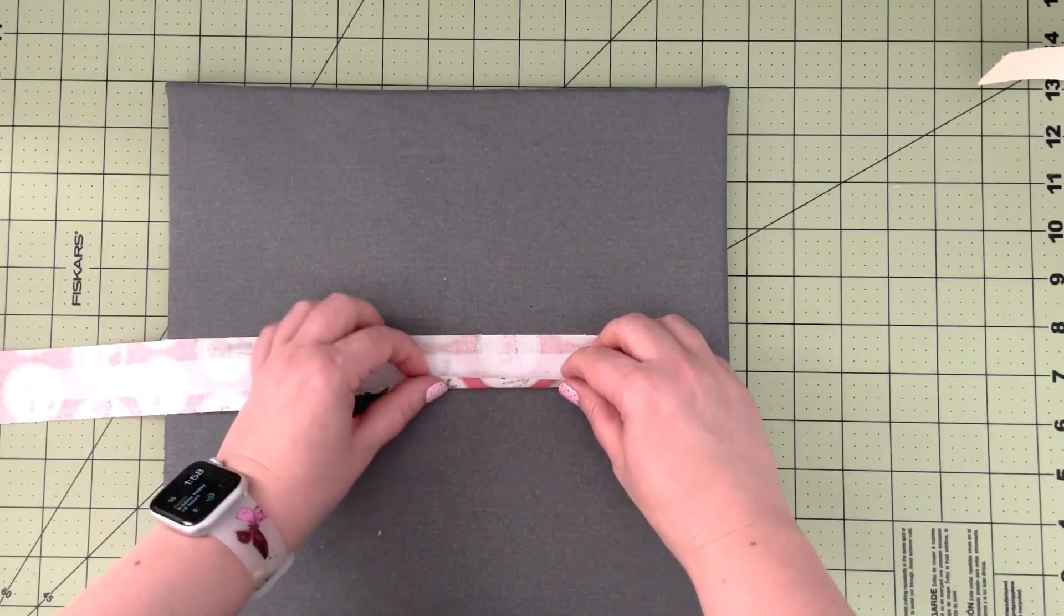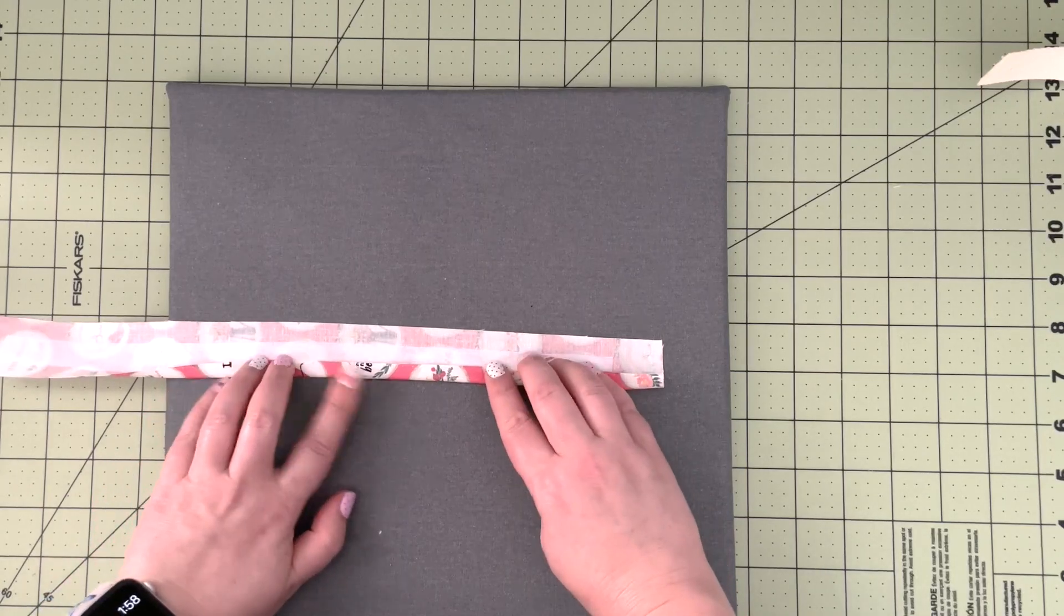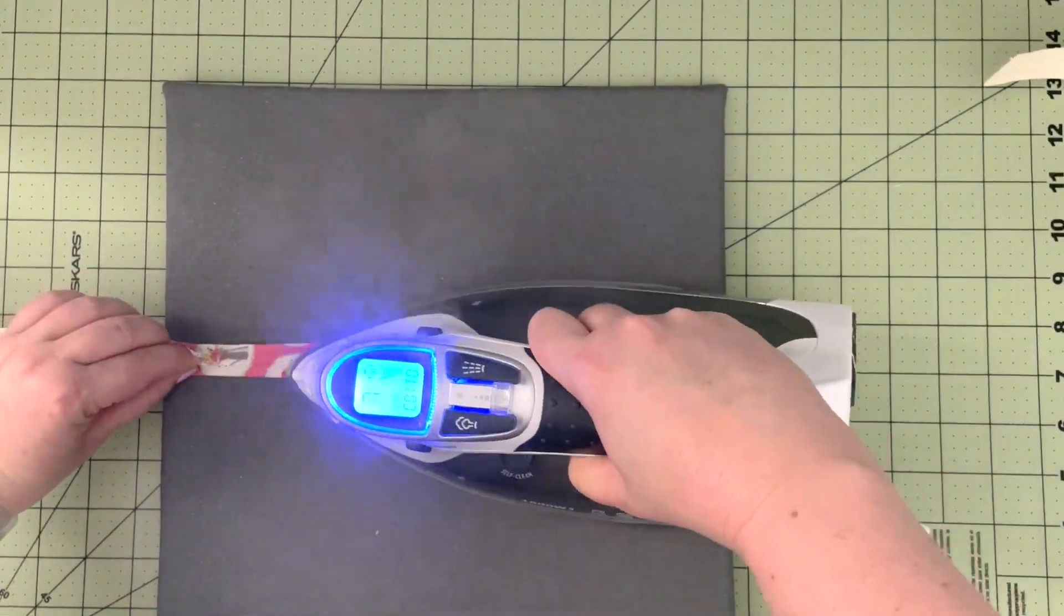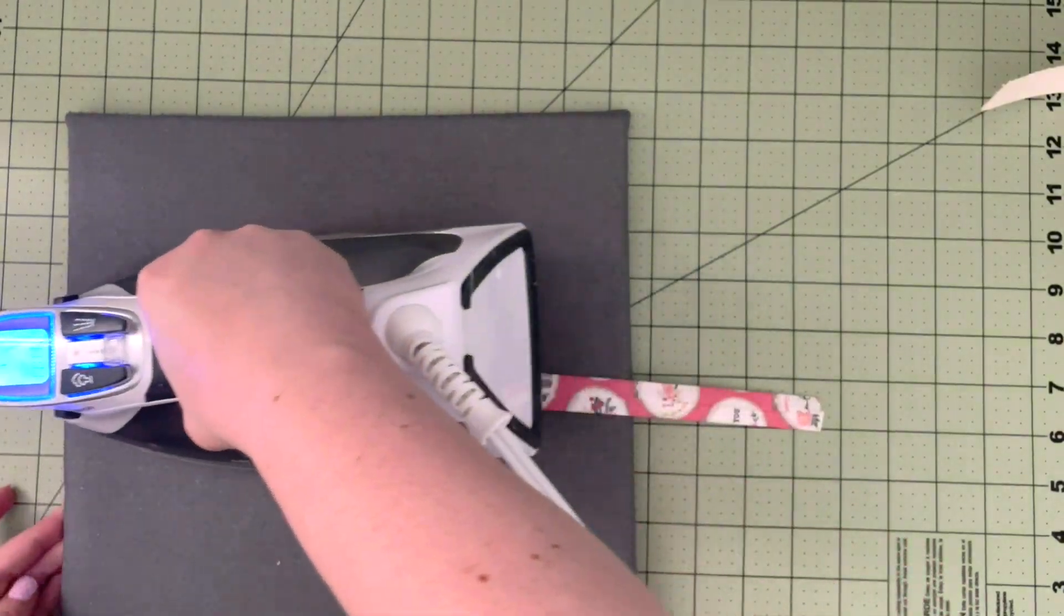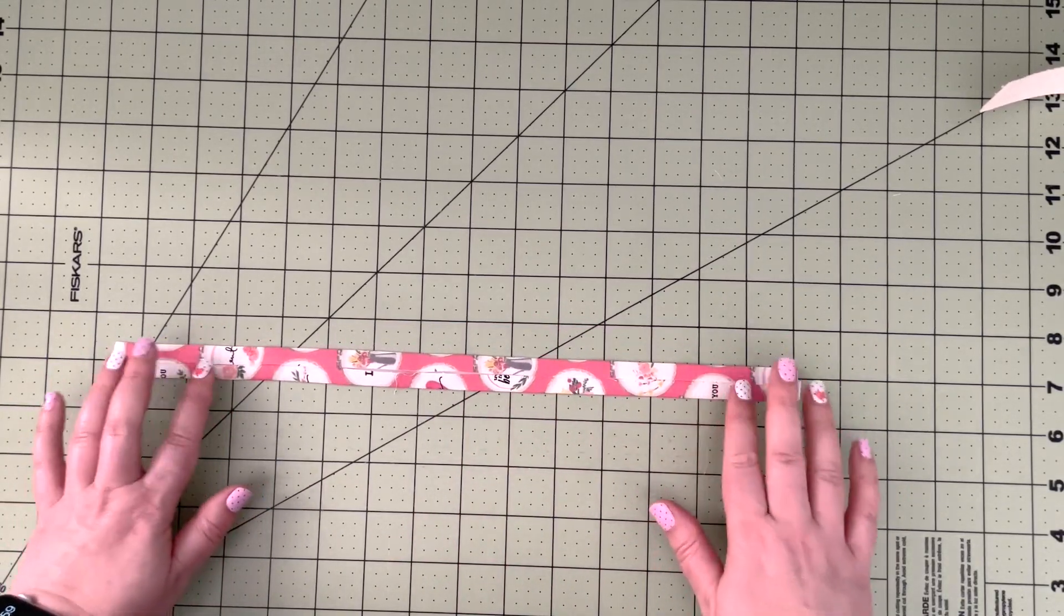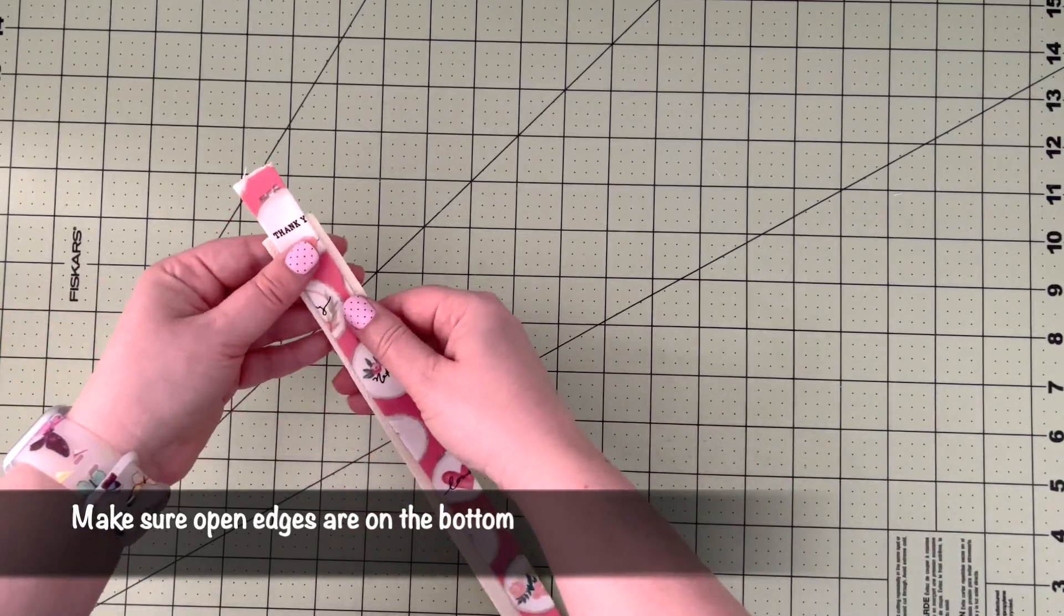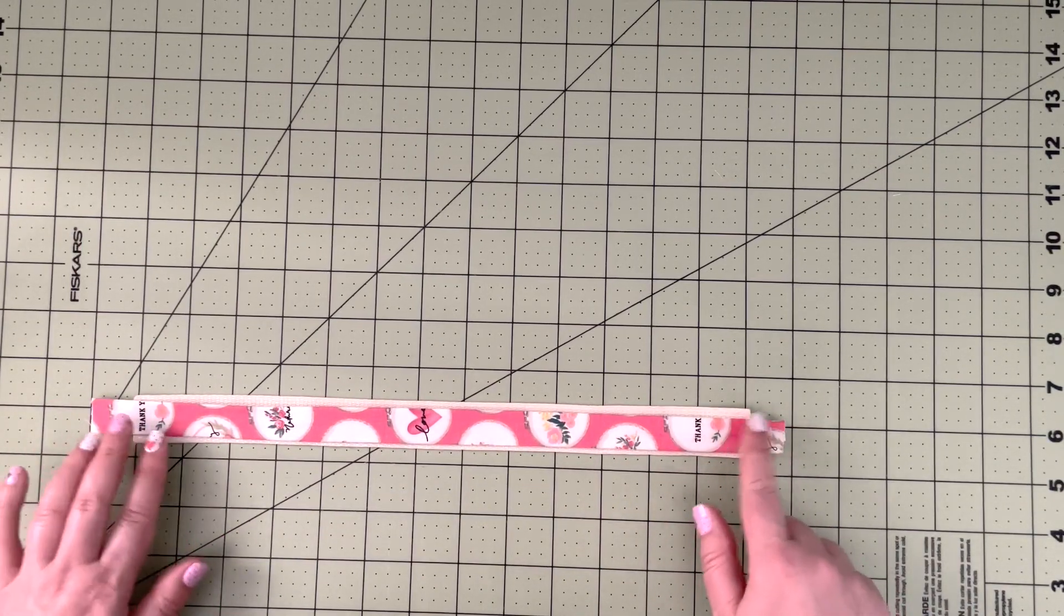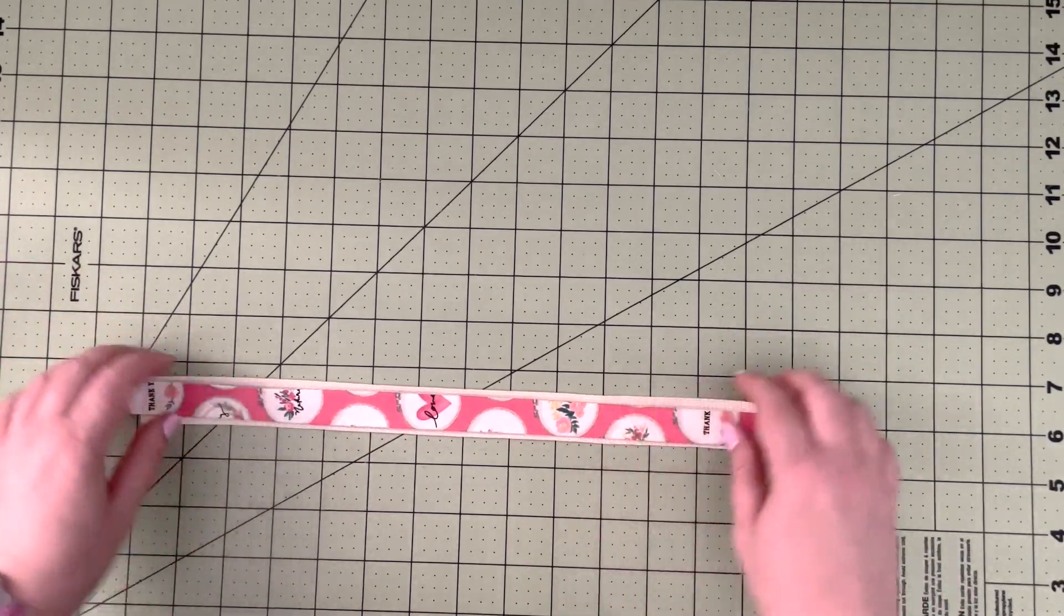After you have your interfacing fused, we're going to now use our iron to create a fold on both sides of the interfacing, folding the fabric inside. When you have your fabric prepped like this, you can attach it to your webbing tape using clips or you can use double-sided tape.